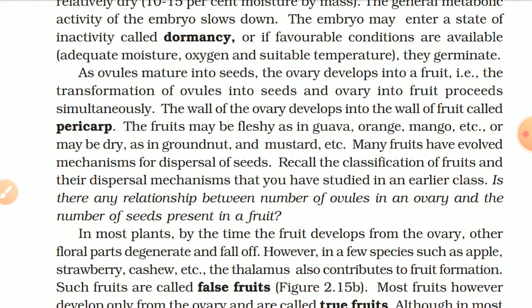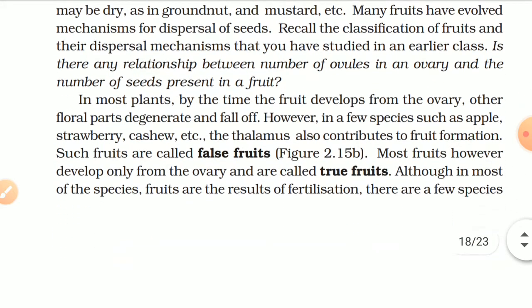The walls of the ovary develop into the walls of the fruit called the pericarp. The fruits may be fleshy (as in guava, orange, mango) or dry (as in groundnut and mustard). Many fruits have evolved mechanisms for dispersal of seeds. In most plants, by the time the fruit develops from the ovary, other floral parts degenerate and fall off. However, in a few species such as apples, strawberry, and cashew, the thalamus also contributes to fruit formation — such fruits are called false fruits.